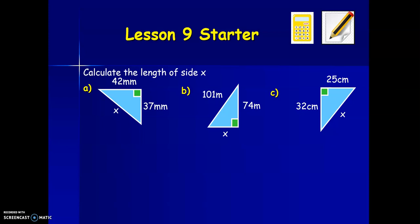Okay, let's look at the solutions. So in A, X is opposite the right angle, so X is the longest side. We need to use the add version of Pythagoras. C squared equals A squared plus B squared. Putting in our values, we get side X squared equals 42 squared plus 37 squared. If we work that out on the calculator, we get 3,133. And then our final step, we need to remember to square root 3,133. So X is equal to 55.97 millimeters.